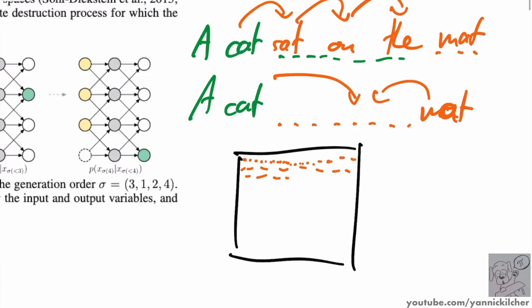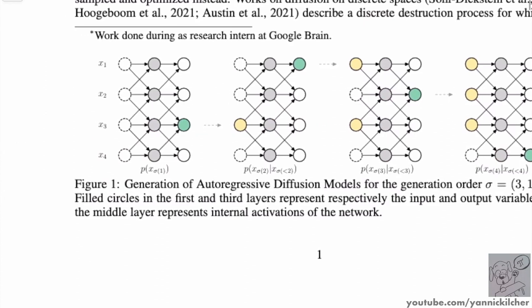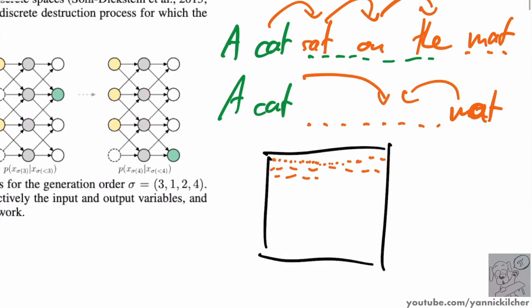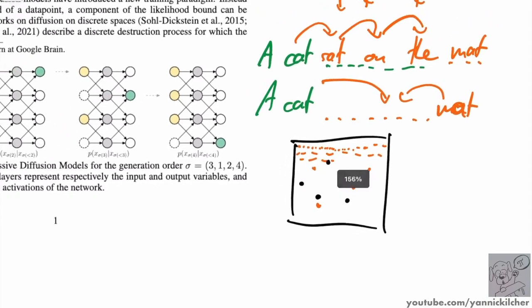What autoregressive diffusion models do is train a model that can produce a sample in any order. We could start with one pixel, then go to another, then another. We can even ask the model which one it feels best about — which one it's most sure about — and then decode that one. We can also tell the model to decode three pixels at a time. That's the trade-off mentioned.